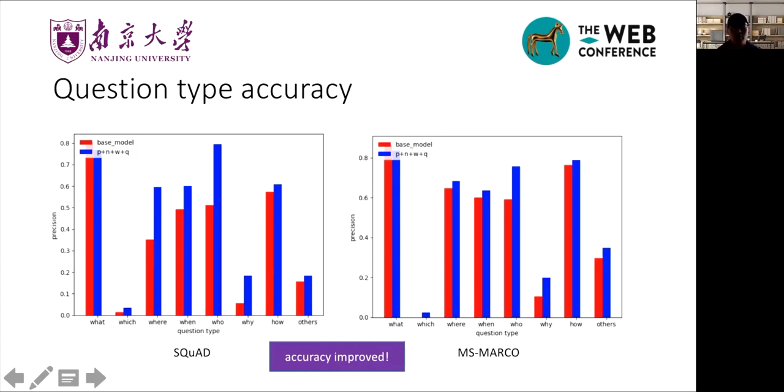We also analyze the influence of deep linguistic representation for question type. Question type is vital for question generation because it guides the remaining generation process and determines part of question meanings. For example, two sentences: 'What was the major reason and justification for the European wars of religion?' and 'Who was the major reason and justification for the European wars of religion?' These two sentences are only different in the question type. However, its meaning is totally different. As we can see in these two pictures, question type accuracy is improved no matter on SQuAD or MS Marco.